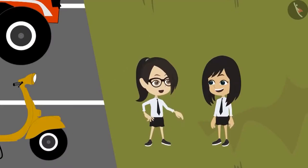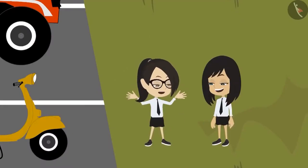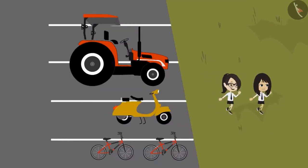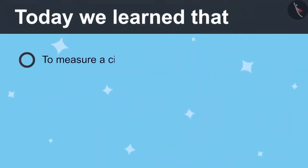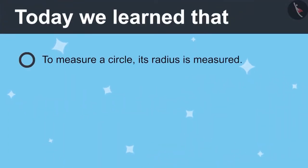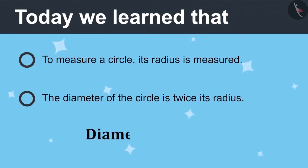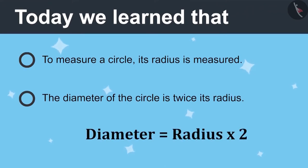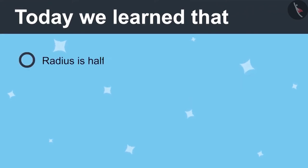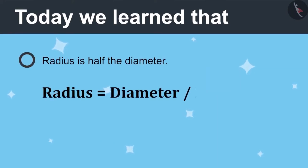Having measured all the wheels, the students go to tell their teacher the results. Today we learned: to measure a circle, its radius is measured. The diameter of a circle is twice its radius — diameter equals radius multiplied by 2. The radius is half the diameter — radius equals diameter divided by 2.